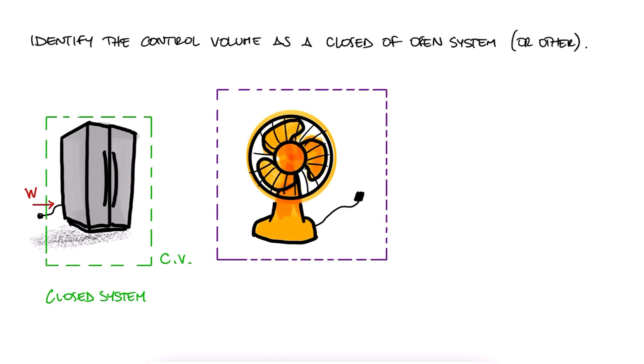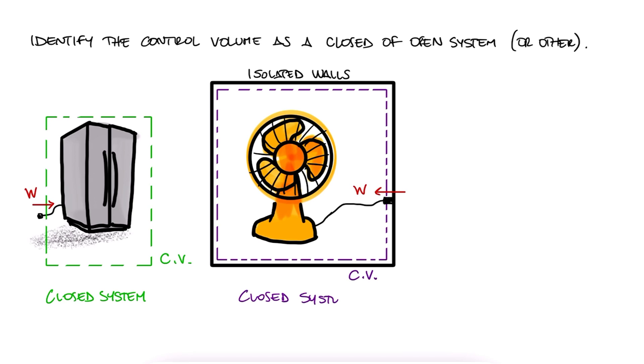What about a fan and a control volume that encompasses a closed room that doesn't let air leave or come in? Well, in this case, we still have energy coming in through the wall in the form of electricity and there is no mass entering or leaving the control volume. Therefore, this is also a closed system.